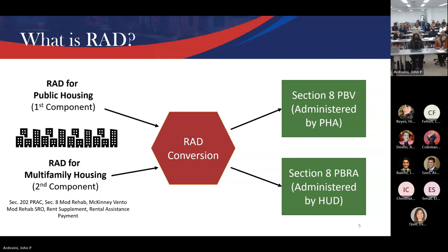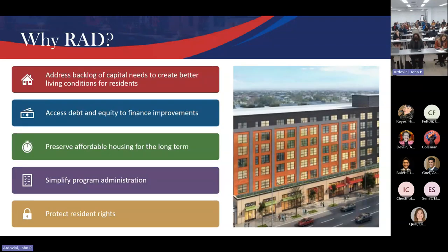What problems were we trying to solve with RAD? We had to address the backlog of capital needs. If you can't do recapitalization under current programs, convert to Section 8 — open up access to debt and equity and do a recapitalization. There's also a long-term preservation component in both programs. On the public housing side, you convert to a long-term contract of 15 to 20 years that you renew in perpetuity — it never goes away.